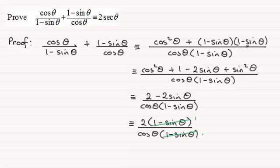So that leaves us with 2 divided by cosine theta. 2 times 1 over cosine theta. 1 over cosine theta is the same as sec theta. So what we end up with is 2 sec theta.